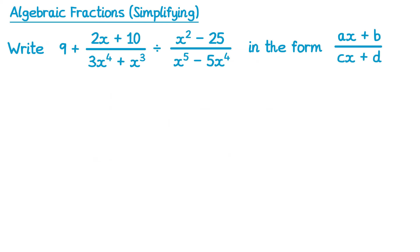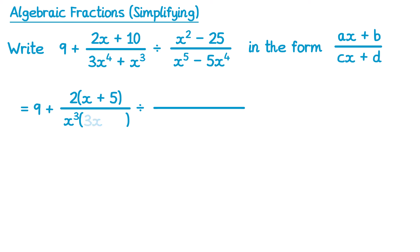And we can even get questions that look like this. In this one we've been told the form we need to present the answer in. I'm going to approach this one by factorising everything I can first. So I'm going to leave that 9 alone and then try and factorise all of these bits of the fractions. Starting with the left fraction on the top, we can factorise out a 2, so that's 2x plus 5. On the bottom we can factorise x to the power 3, and inside we need 3x plus 1. On the right fraction I can see a difference of two squares on the top, so that's x plus 5, x minus 5. And on the bottom we can factorise out x to the power 4, and inside we would need x subtract 5.